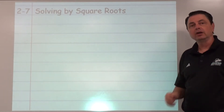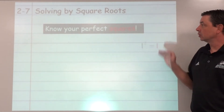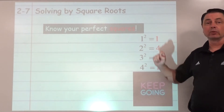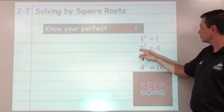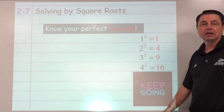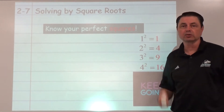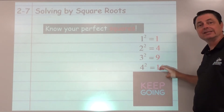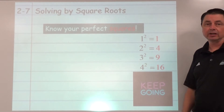We're going to start with skills based in square roots. In order to do that, we need to know our perfect squares. So 1 squared is 1, 2 squared is 4, 3 squared is 9, 4 squared is 16. Keep going on down the list. When we talk about perfect squares, we're talking about numbers like 1, 4, 9, 16 — the right side of our column, of our equal sign.